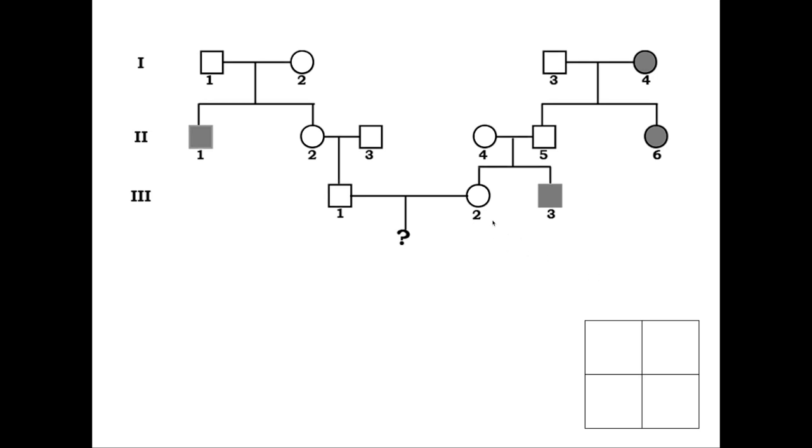In this example, a woman, individual 3-2, is pregnant. Since a number of her relatives have the same particular genetic disorder, she wants to know the likelihood or probability that her unborn child, represented by the question mark, will be affected.